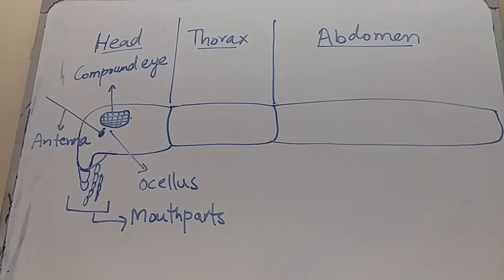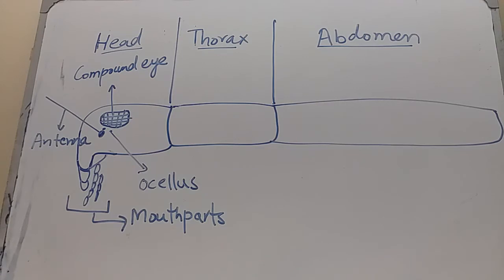Diagrammatically, the insect body shows three parts: head, thorax, and abdomen. In the head, there is a pair of large prominent compound eyes, sensitive to light. The head also consists of either two or three simple eyes known as ocellus or ocelli, which detect small changes in light intensity.